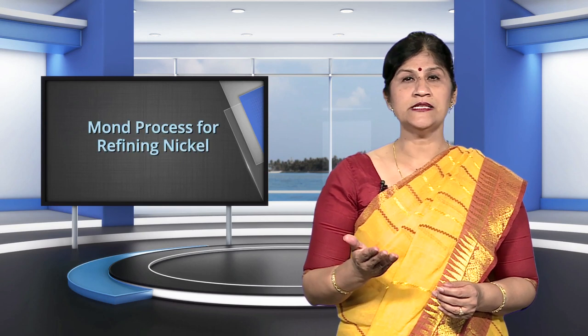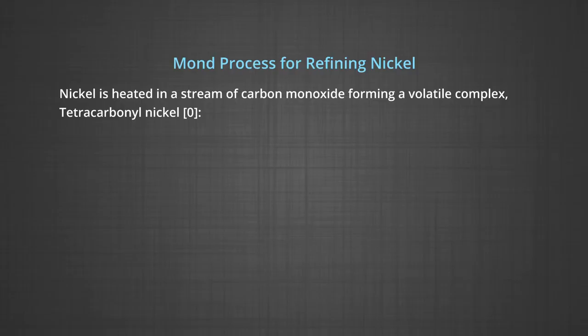Following examples will illustrate this technique. Mond's process for refining of nickel. In this process, nickel is heated in a stream of carbon monoxide, forming a volatile complex, nickel tetracarbonyl. So, nickel plus carbon monoxide, when heated at 330 Kelvin to 350 Kelvin form nickel tetracarbonyl.